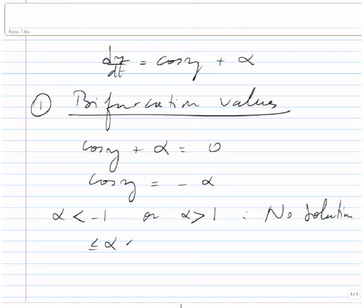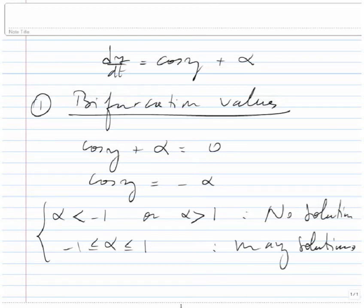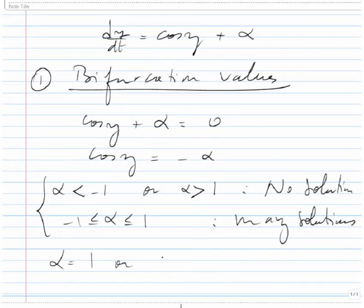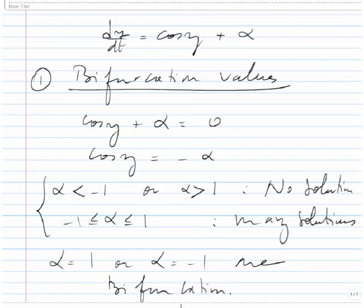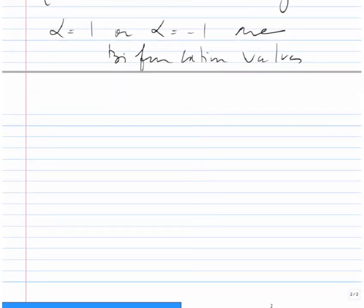If α is between -1 and 1, then we have many constant solutions. So clearly, α = 1 and α = -1 are the bifurcation (verification) values. We can also see this by graphing cos(y) versus y and shifting it up by α units if α is positive, or down if α is negative.